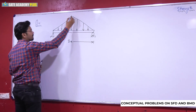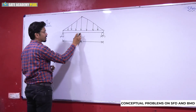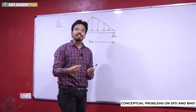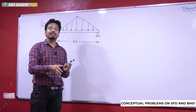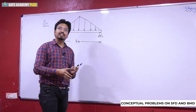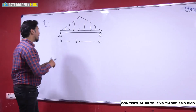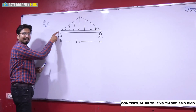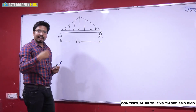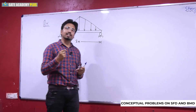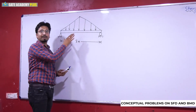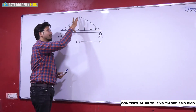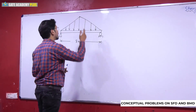यहाँ पर जो maximum intensity है वो mid span पर है। Question में कभी-कभी statement form में बोला जाता है, जैसे: simply supported beam of span length 8 meters carrying a uniformly varying load whose intensity is zero at the extreme ends and maximum at the mid span। इसके लिए SFD और BMD draw करना है।